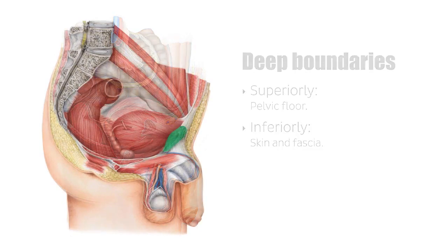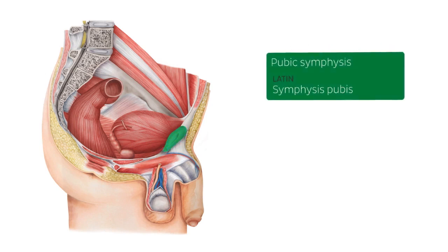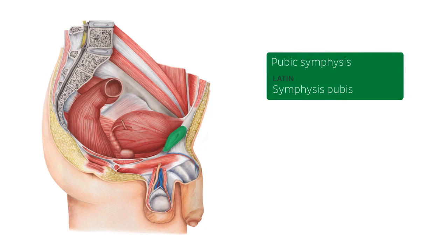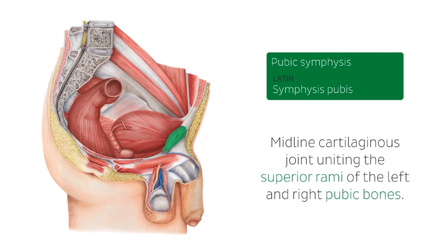We're going to start with this structure — we removed some of the fascia and bones, some of the peritoneum, and the pelvic bones to highlight what is known as the pubic symphysis. This is an important midline cartilaginous joint uniting the superior rami of the left and right pubic bones. It is located anterior to the urinary bladder and superior to the external genitalia, as you can clearly see here.